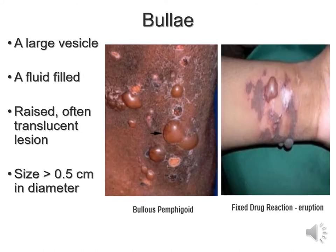A bulla or bullae is a large vesicle filled with fluid. They're raised and often translucent, and their size is typically greater than 0.5cm in diameter. Sometimes people refer to them as blisters, and they can be the consequence of various disease processes. For example, a fixed drug reaction: I looked after a patient in Saudi Arabia who was an epileptic in status epilepticus, being treated with Dilantin — phenytoin hydrochloride. On her first dose she had a fixed drug reaction, with bullae all over her body that looked like second-degree burns.